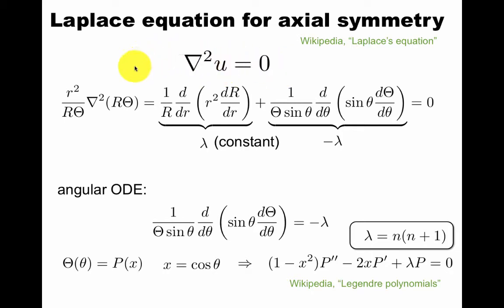If we make an ansatz that U is a function of radius times a function of angle theta, then we're assuming axial symmetry, no dependence on the last angle of spherical coordinates. Then we have a separation ansatz. We get this is one constant and this has to be minus that constant. So we get two ODEs.